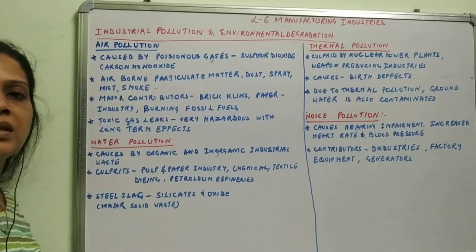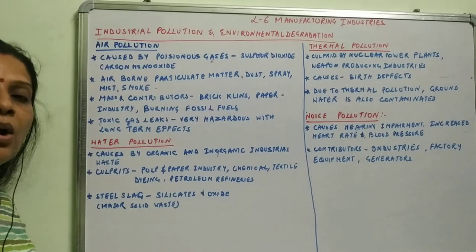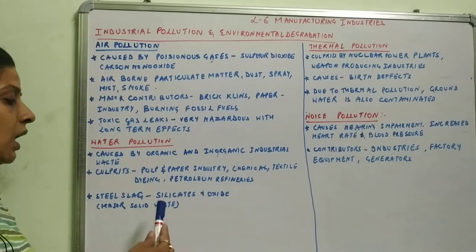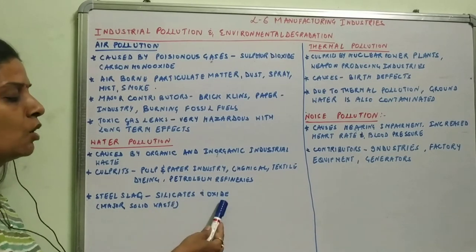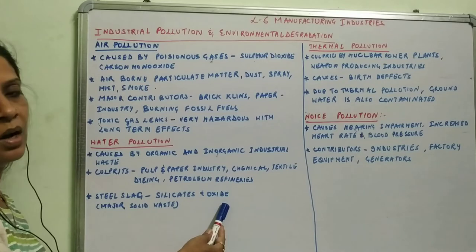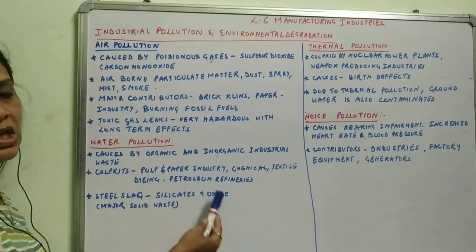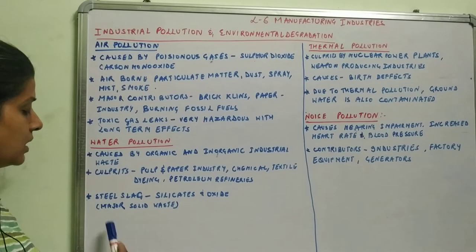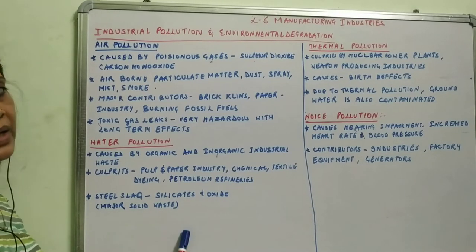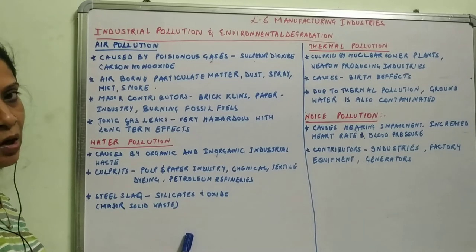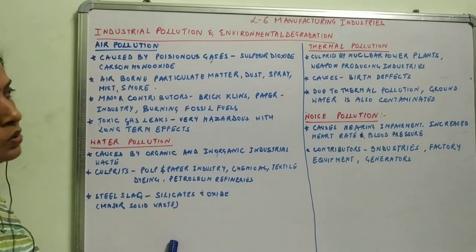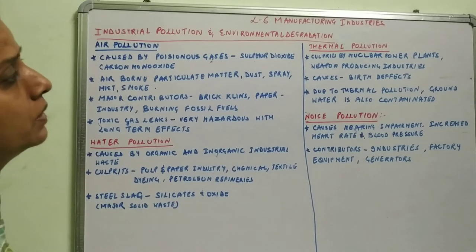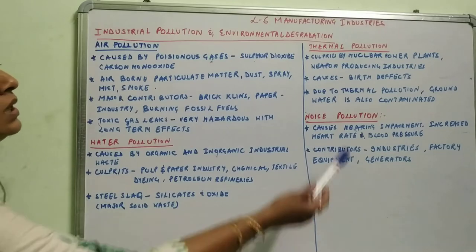Steel slag — the waste that comes out when steel is melted — is a major source of solid waste that causes water pollution. When steel is melted, silicates and oxides come out, and when these cool down they become solid, forming steel slag. Next is thermal pollution, whose main culprits are nuclear power plants and weapon-producing industries.